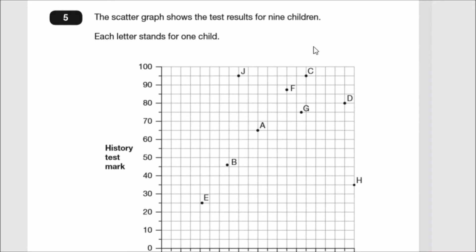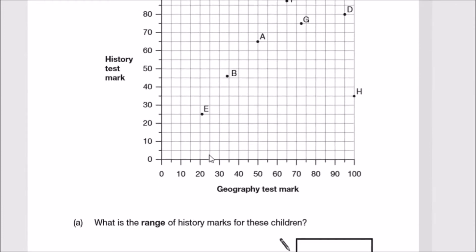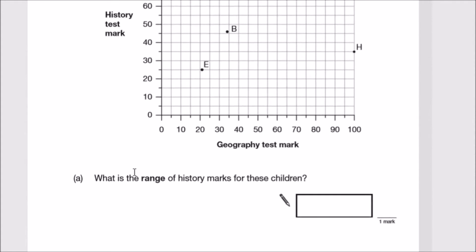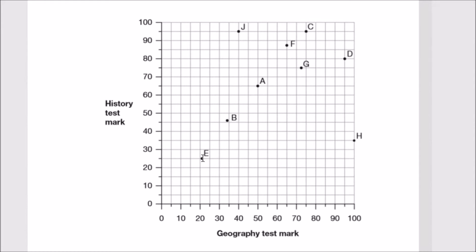Question five: The scatter graph shows test results for nine children where each letter stands for one. This is a two-way graph with geography and history test marks. For example, pupil E scored 25 in history and just over 20, probably 21 or 22, in geography. What is the range of history marks? Range means difference between highest and lowest. E was lowest at 25, highest was J and C at 95, so 95 minus 25 gives us 70.